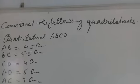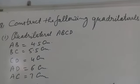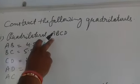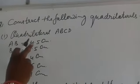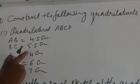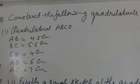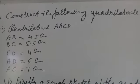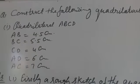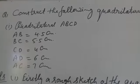Construct the following quadrilaterals. First: Quadrilateral ABCD with AB = 4.5 cm, BC = 5.5 cm, CD = 4 cm, AD = 6 cm, and AC = 7 cm.